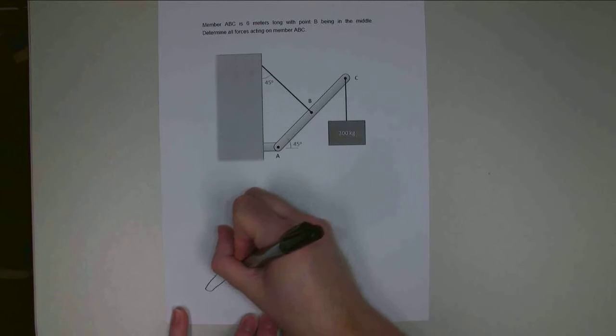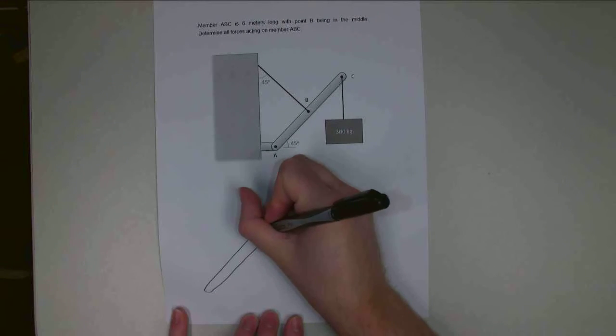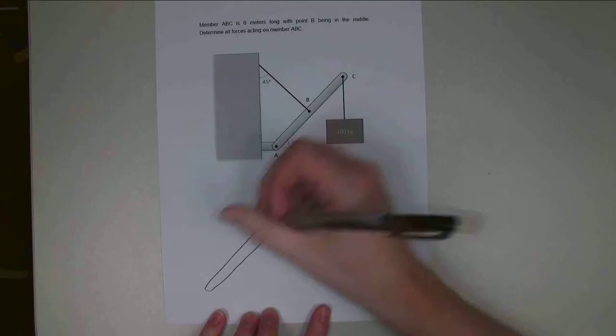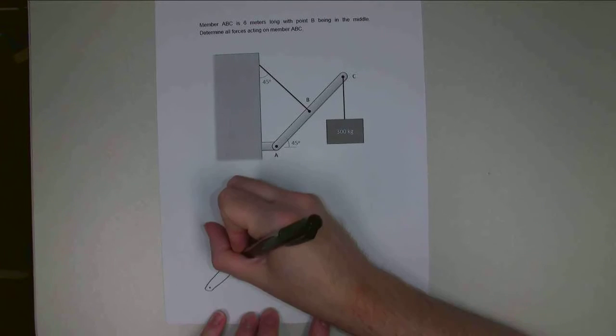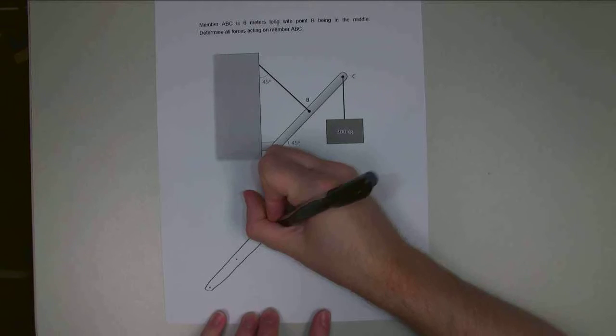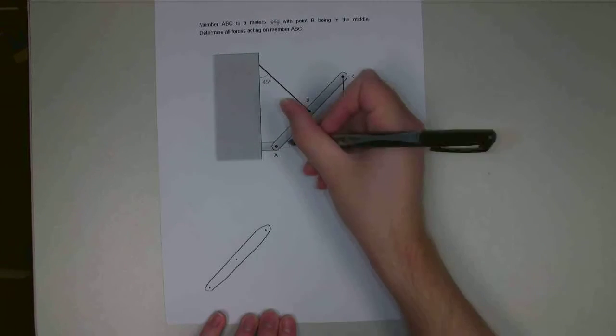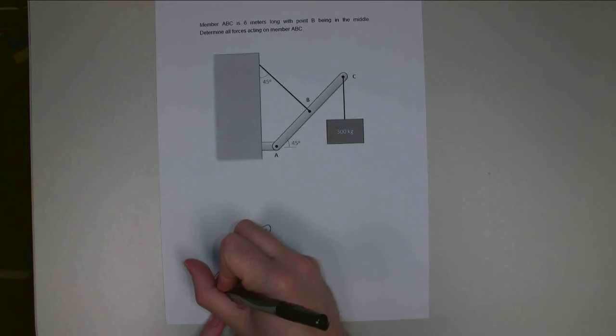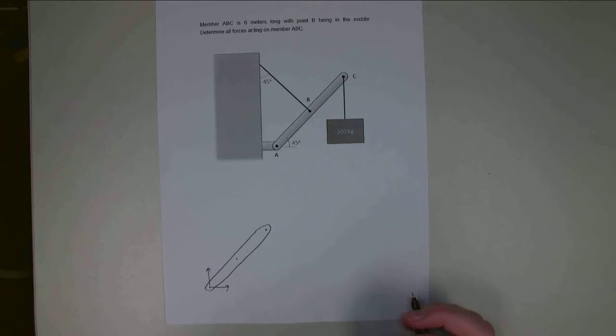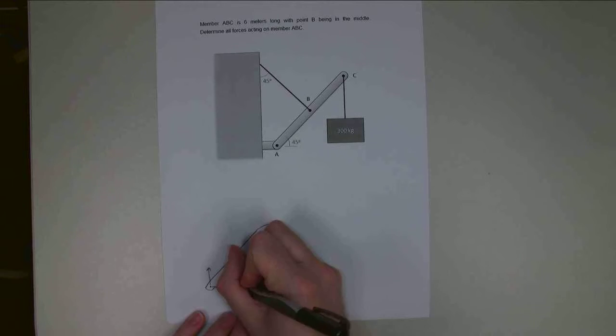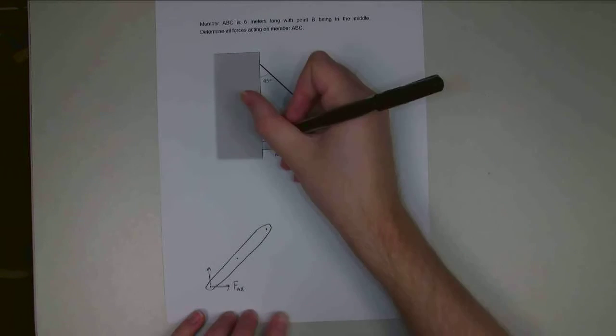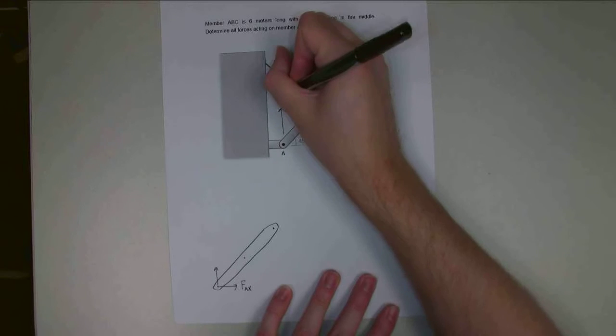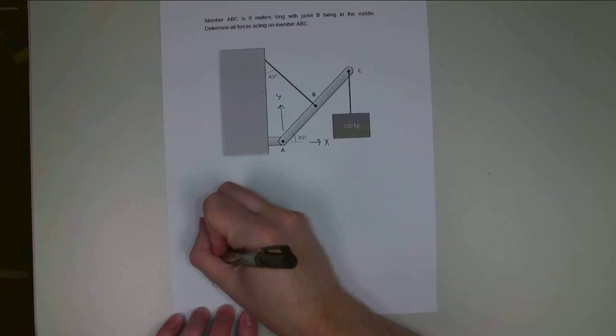For the free body diagram, I'm going to draw member ABC and start drawing in the forces. So I've got point A down here, point B, and point C. At point A, I've got the pin joint, so I've got an unknown force in the Y direction, unknown force in the X direction. I'm going to label this one FAX, and I should label my axes as well, so this will be X, this will be Y, so FAY.